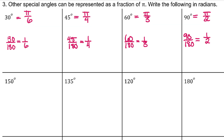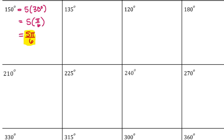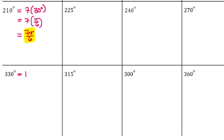Looking at 150 degrees — notice that 150 degrees is 5 thirty-degree angles, so plugging in pi over 6 and simplifying gives 5 pi over 6. 210 degrees is 7 thirty-degree angles, so 7 times pi over 6, or 7 pi over 6. And 330 is 11 thirty-degree angles, so 11 pi over 6.